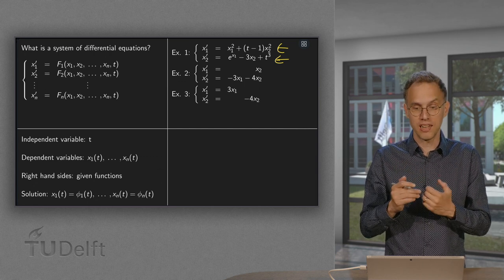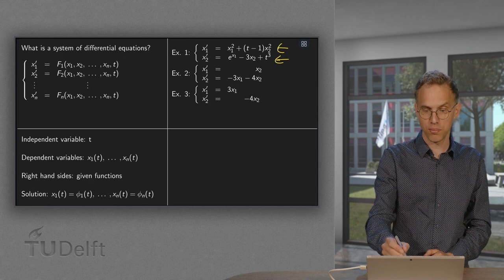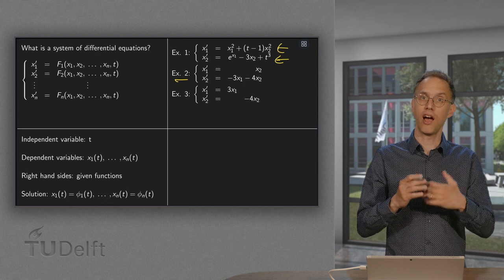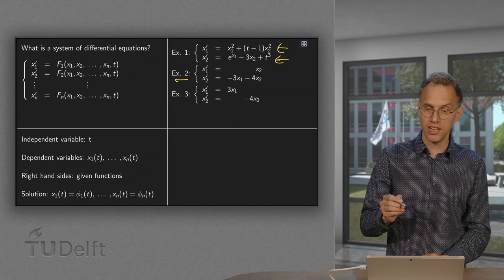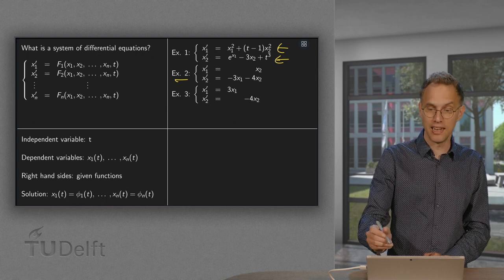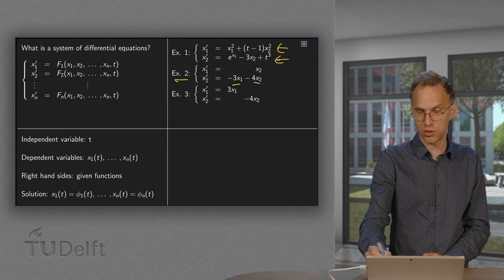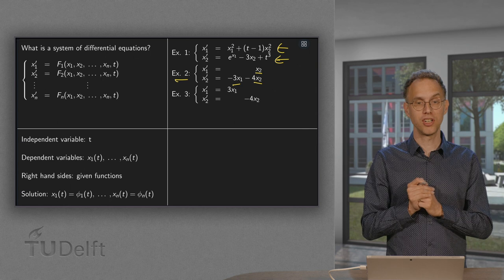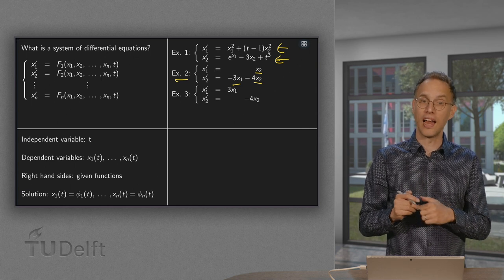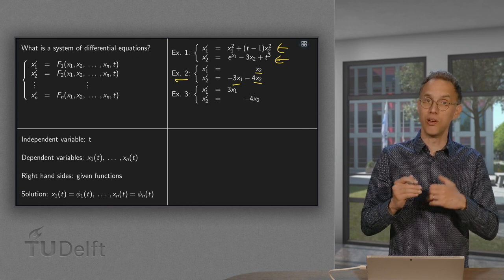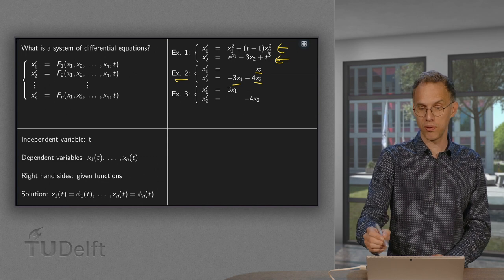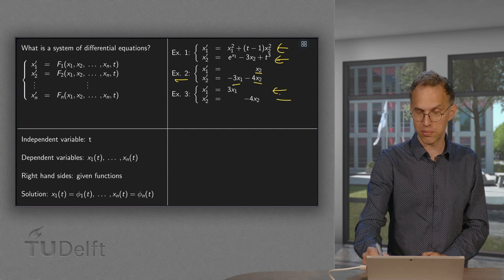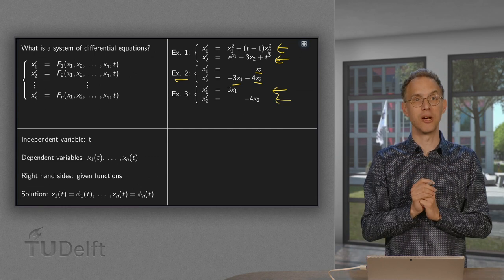So let us take a bit easier example. In example two, the right-hand sides do not depend on t, and furthermore they depend only linearly on x1 and x2. That is also an example of a system of differential equations. And in example three we look at an even easier case: x1 prime equals 3 times x1, and x2 prime equals minus 4 times x2.